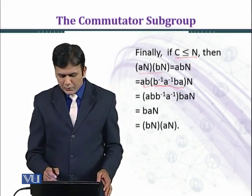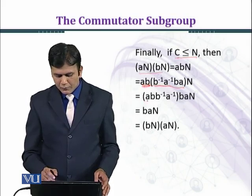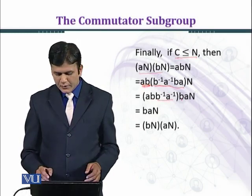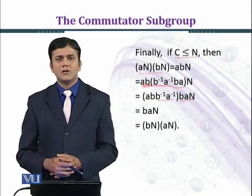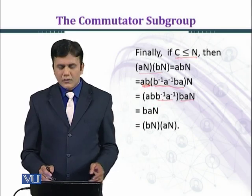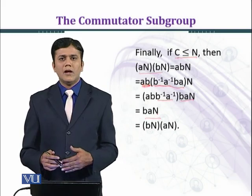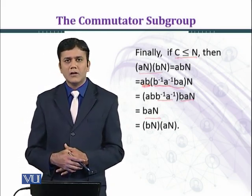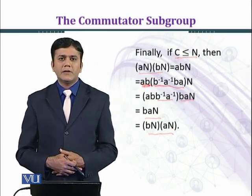Using the associative property, we multiply AB with b⁻¹a⁻¹ and baN. Since b · b⁻¹ is the identity element e, and G is a group, we get ABb⁻¹a⁻¹ · e · baN, which simplifies to baN. Therefore aN · bN = bN · aN, which means G over N is commutative, and thus G over N is an abelian group.